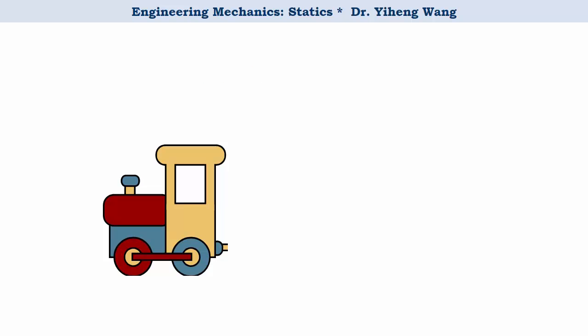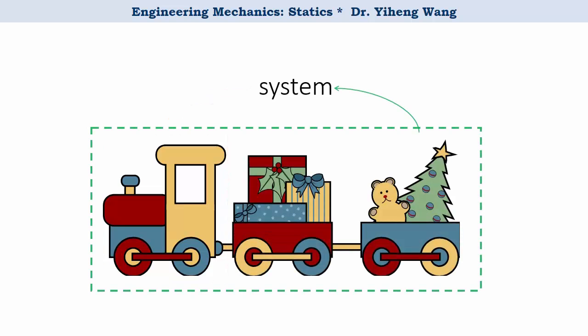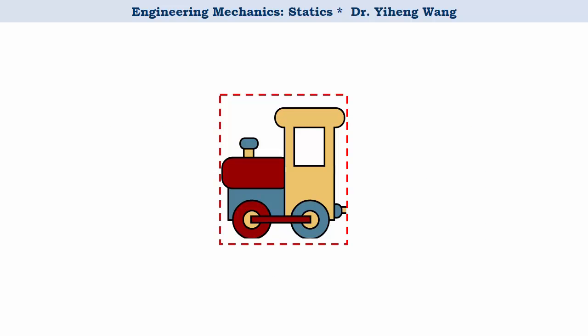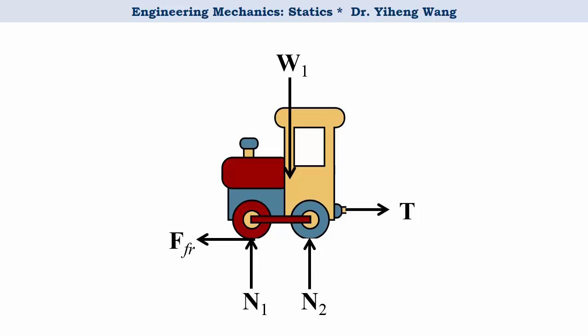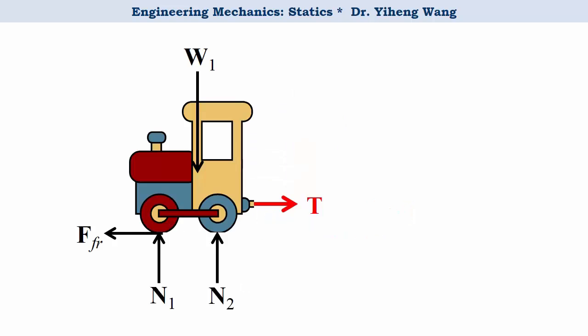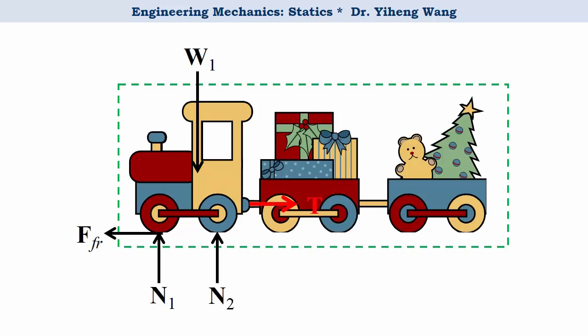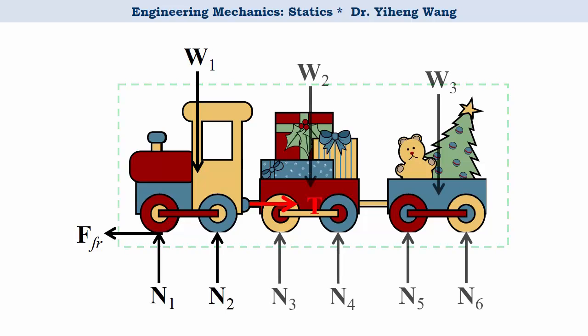I cannot stress enough how important it is to be clear on the system that you choose for your analysis. Your system could be a single body or multiple bodies. Note that the multiple bodies in the system don't necessarily have physical contacts. Depending on how you define your system, the free body diagrams should be sketched differently. For example, if you only choose the train engine as your system, then on the free body diagram you should include the weight, the normal supporting forces, the frictional force, and the force between the engine and the train car. However, if you choose the entire train as your system, you not only need to add the forces acting on the new parts — the new weights and the new normal forces — but more importantly, you need to exclude force T, since it is now considered an internal force within the system and therefore should not appear on the free body diagram.